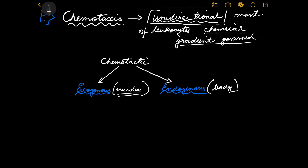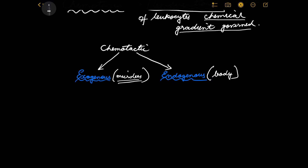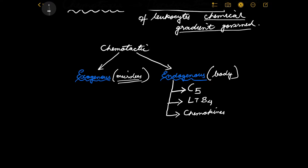For endogenous chemoattractant molecules, a few examples are noteworthy. First, complement C5 - a very strong chemoattractant molecule produced within our body. Then, Leukotriene B4, another very powerful endogenous chemoattractant molecule. And chemokines, which we discussed previously - members of the cytokine family acting as very powerful chemoattractant molecules produced within our body, making them endogenous chemotactic molecules.